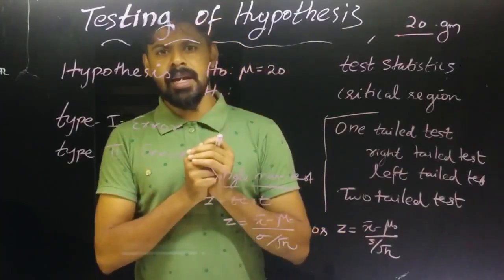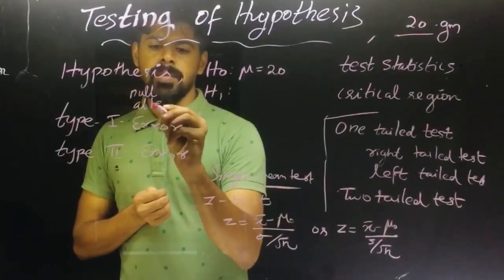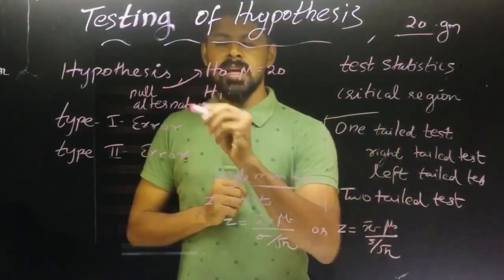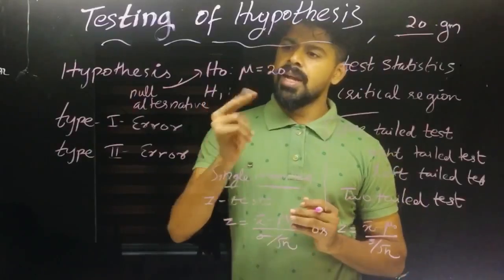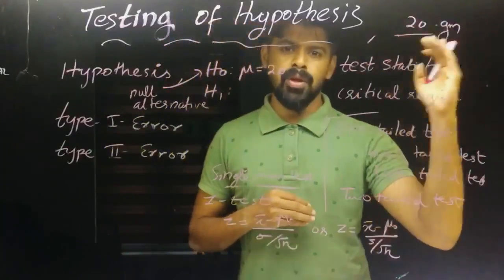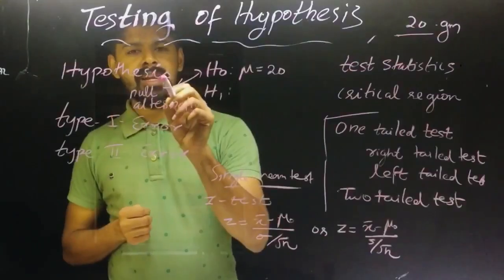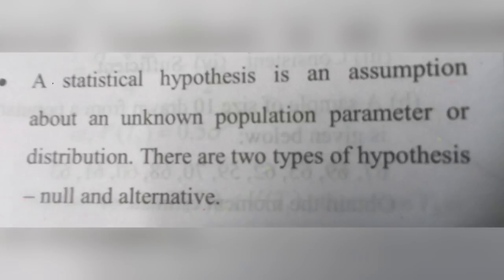We will test this. The null hypothesis can be tested against an alternative. H0 is the null hypothesis: H0: mu = 20 grams. We test it against an alternative hypothesis. A statistical hypothesis is an assumption about an unknown population parameter or distribution. There are two types: null hypothesis and alternative hypothesis.